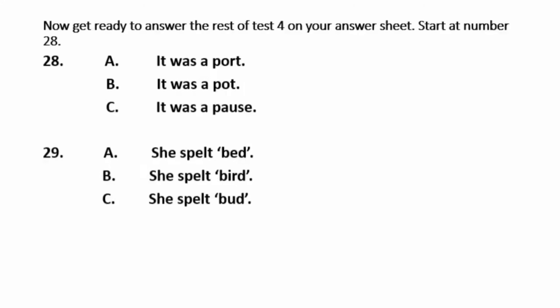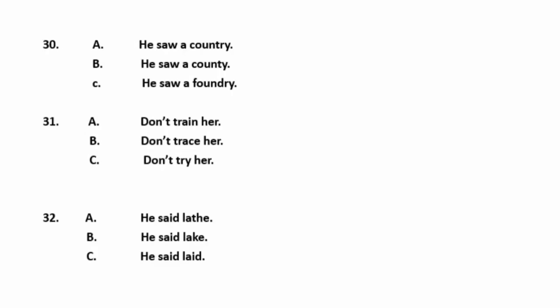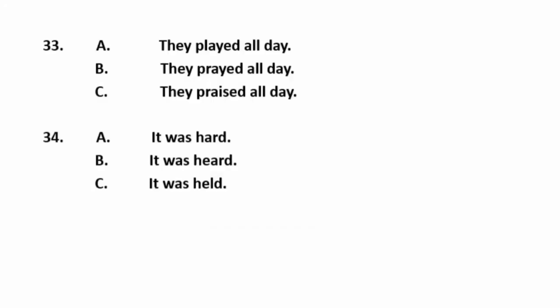Now get ready to answer the rest of test 4 on your answer sheet. Start at number 28. Number 28: It was a pause. Number 29: She spelled bad. Number 30: He saw a foundry. Number 31: Don't trace her. Number 32: He said late. Number 33: They played all day. Number 34: It was heard.